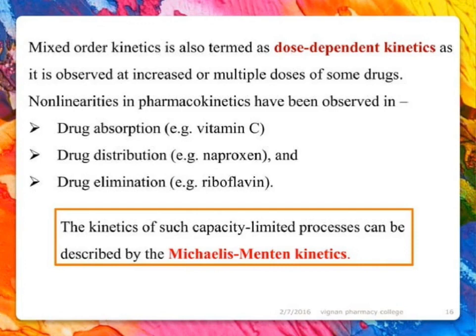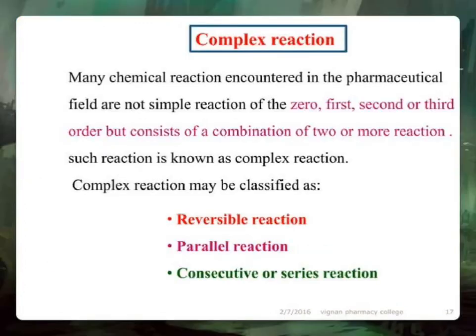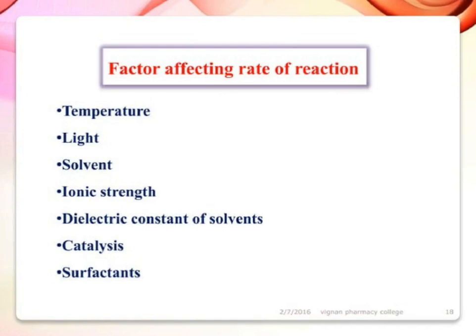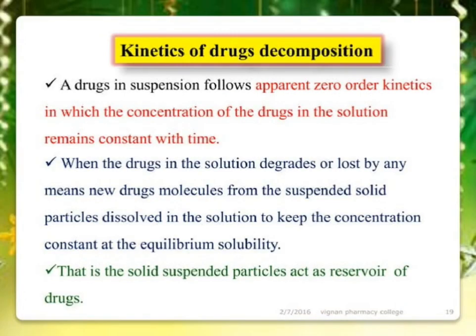Nonlinearities in pharmacokinetics have been observed in drug absorption (e.g., vitamin C), drug distribution (e.g., naproxen), and drug elimination (e.g., riboflavin). Such capacity-limited processes can be described by Michaelis-Menten kinetics. Complex reactions in the pharmaceutical field are combinations of two or more reaction types and may be classified as reversible, parallel, or consecutive (series) reactions. Factors affecting rate of reaction include: temperature, light, solvent, ionic strength, dielectric constant of solvents, catalysts, and surfactants.